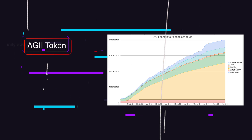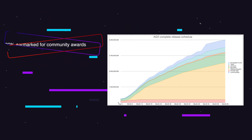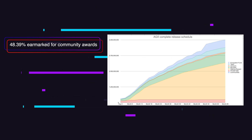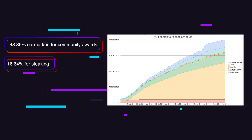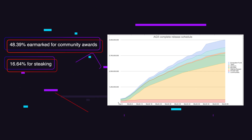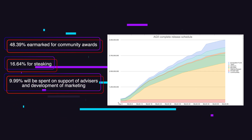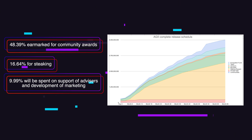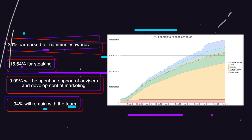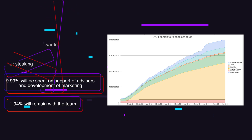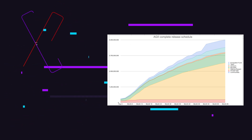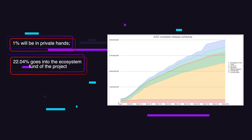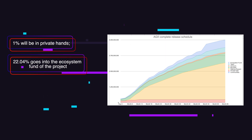The AIG token is based on the following distribution: 48.39% in market for community awards, 16.64% for staking, 9.99% will be spent on support of advisors and development of marketing, 1.94% will remain with the team, 1% will be in private hands, and 22.04% goes into the ecosystem fund of the project.